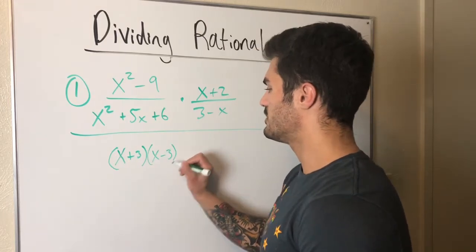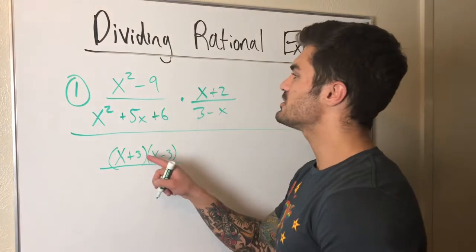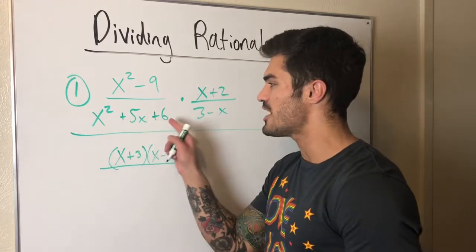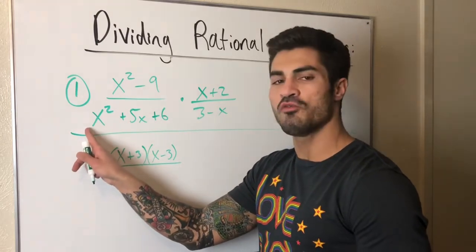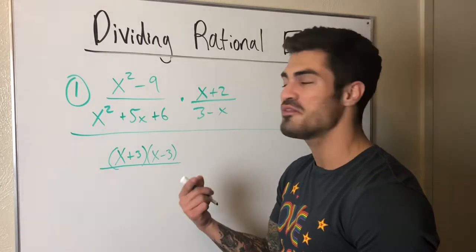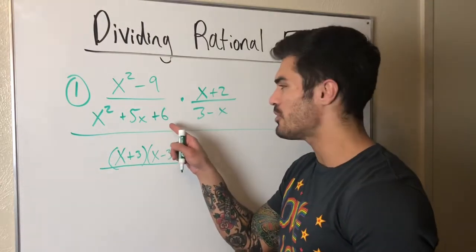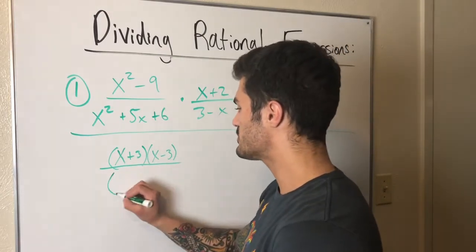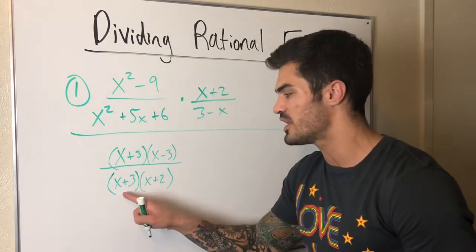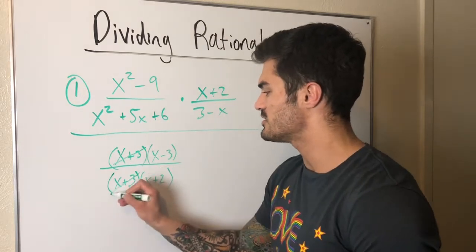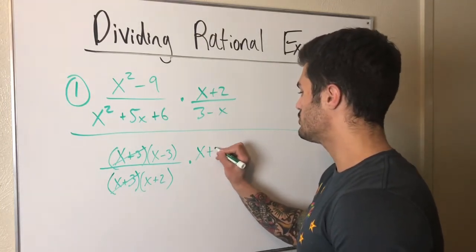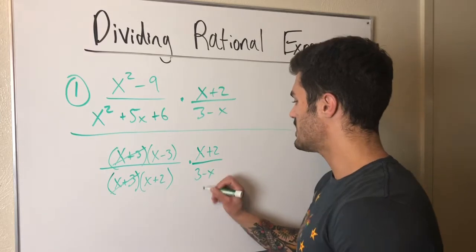So we have (x+3)(x-3) on top. Now I can factor the bottom trinomial — it has a leading coefficient of 1, so I look for two numbers that multiply to 6 and add to 5. That's 3 and 2, so it factors to (x+3)(x+2). And look — I can already cancel a factor of (x+3) on the top and bottom. Now we continue multiplying by (x+2) over (3-x).